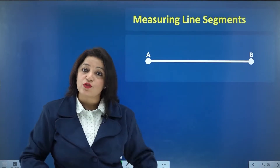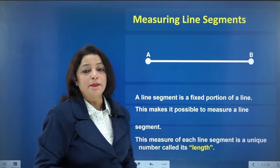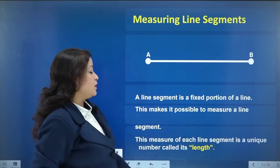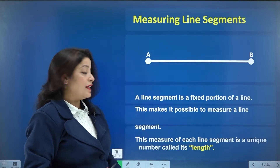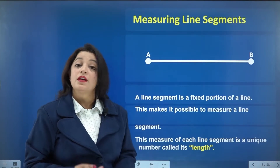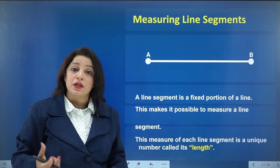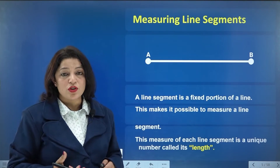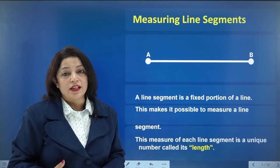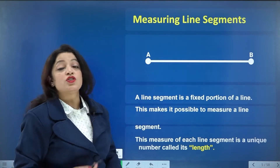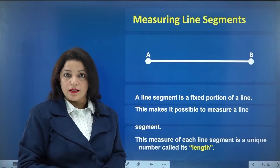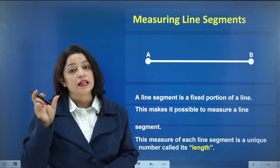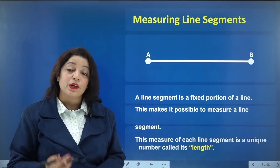There are different ways in which we can measure a line segment. A line segment is a fixed, finite portion of a line. Since it is finite, you can measure it — you cannot measure the length of a line because it is infinite. You can only measure the length of a line segment because it is fixed and finite. The measure of each line segment is a unique number called its length.